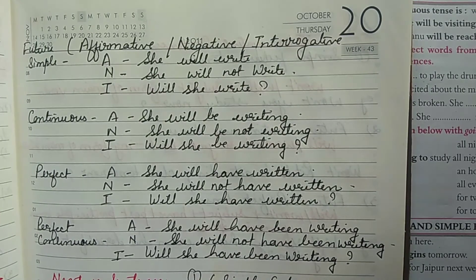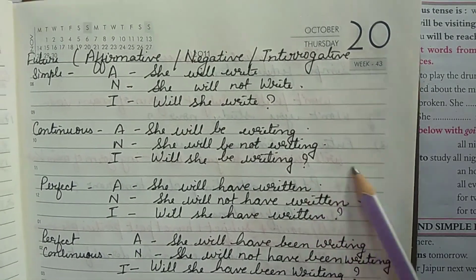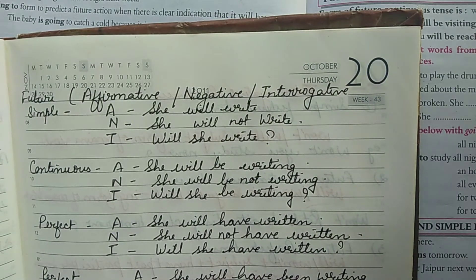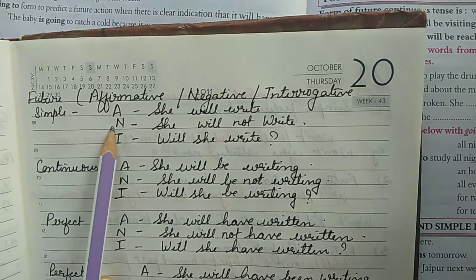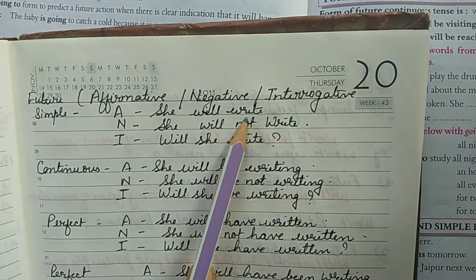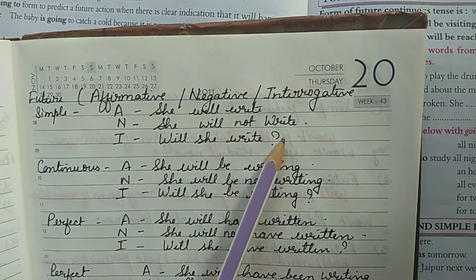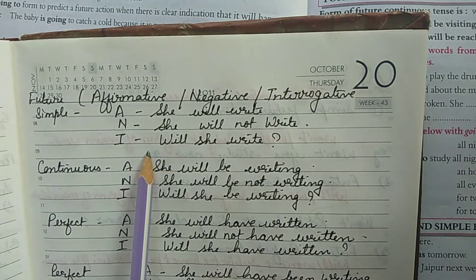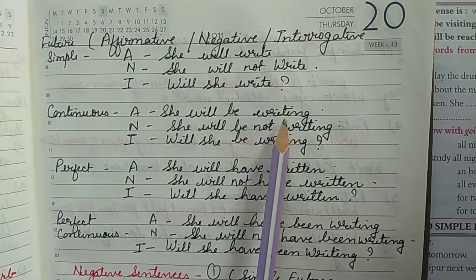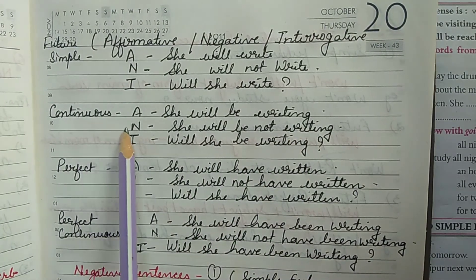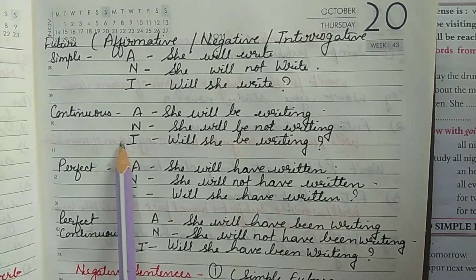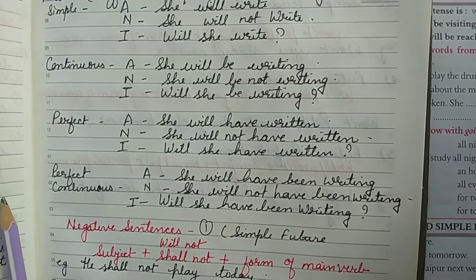Now let's look at affirmative, negative, and interrogative forms. Affirmative is the positive statement, negative uses 'not,' and interrogative converts the sentence into a question. For the simple future: affirmative — 'She will write'; negative — 'She will not write'; interrogative — 'Will she write?' For the future continuous: affirmative — 'She will be writing'; negative — 'She will not be writing'; interrogative — 'Will she be writing?'